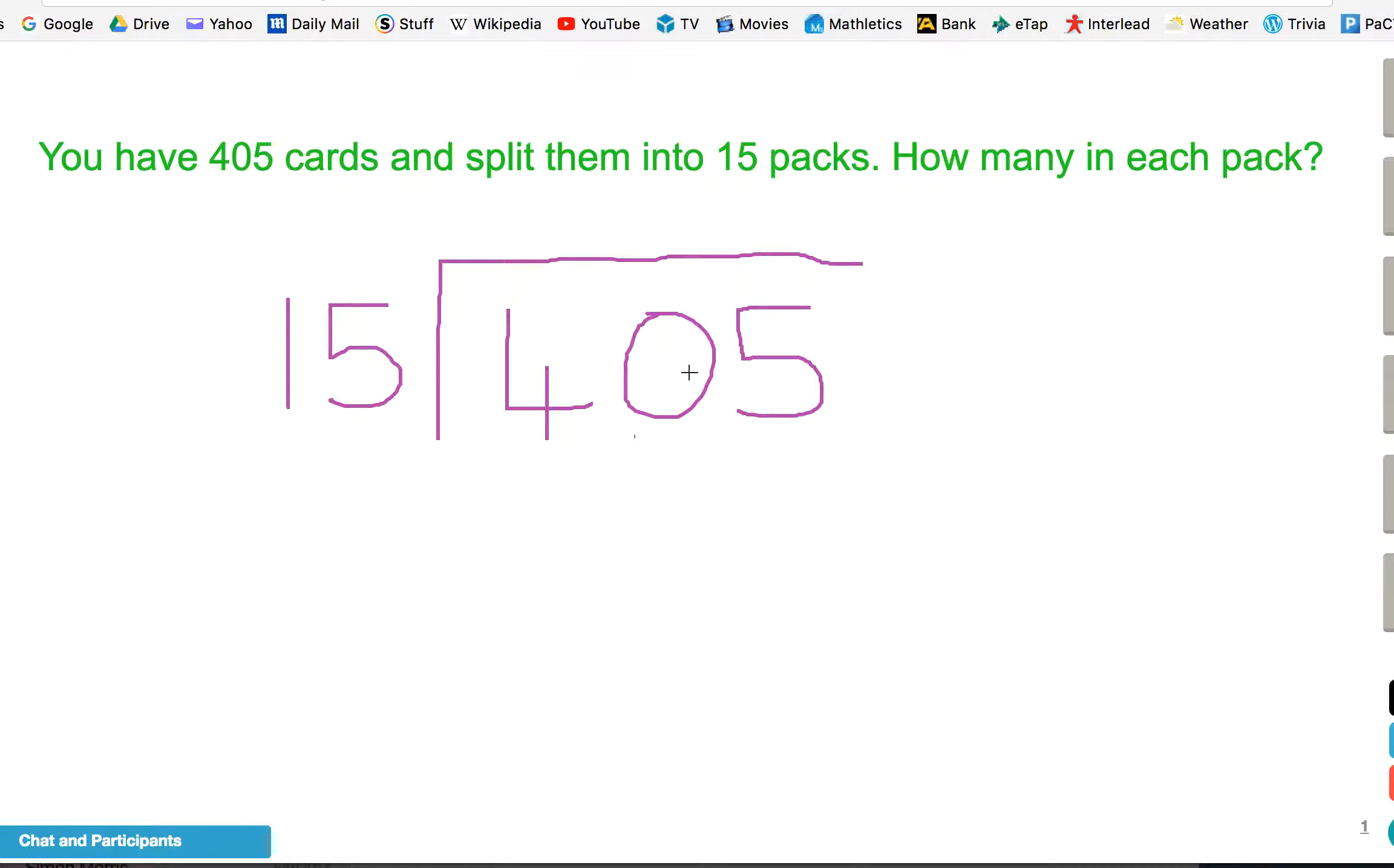So we start, just as with short division, we start from the left, looking at the first number. How many 15s are in 4? Obviously, there are no 15s in 4. So just like short division, we put 0 at the top, and we carry the 4 across. So far, it's exactly the same.